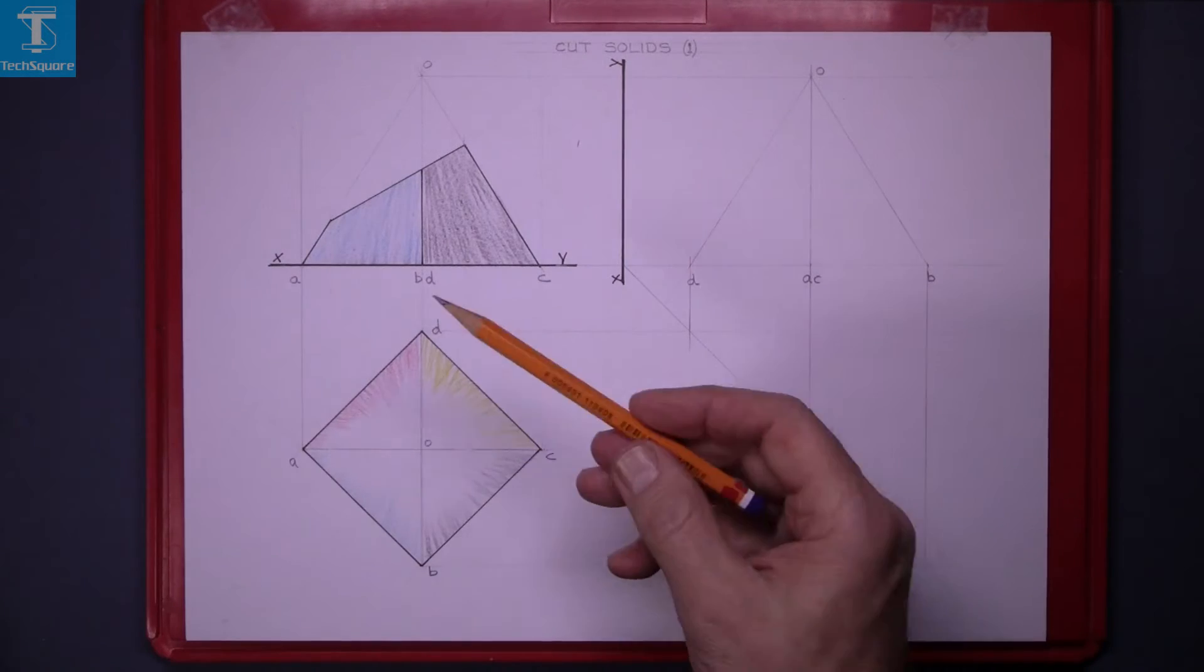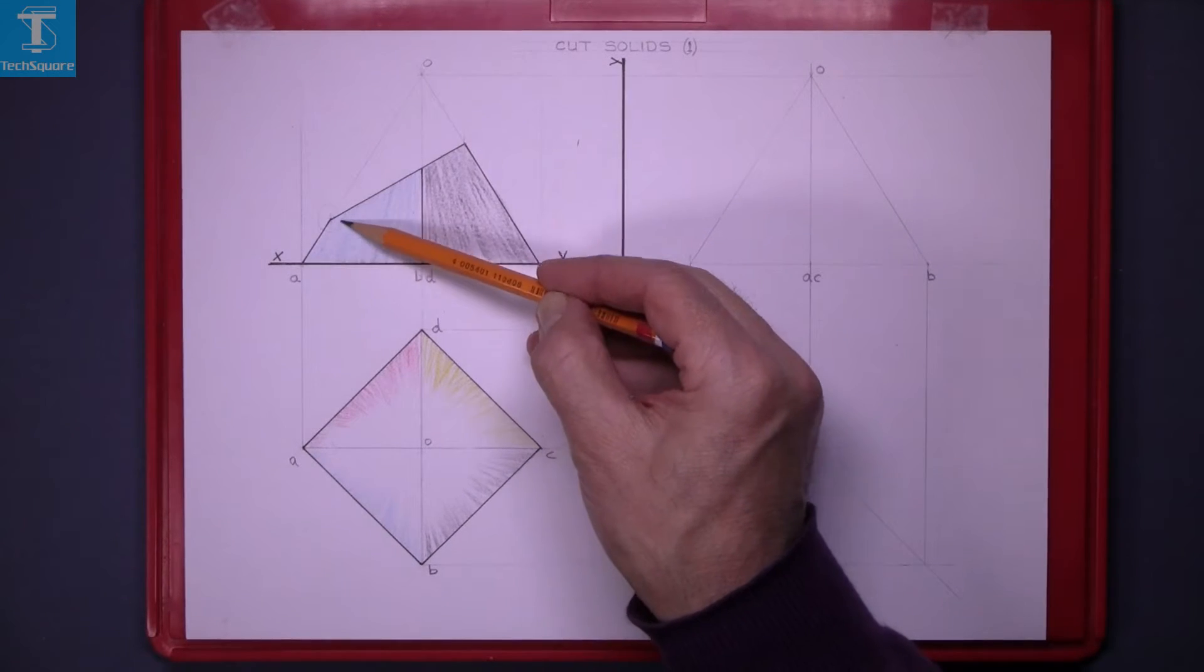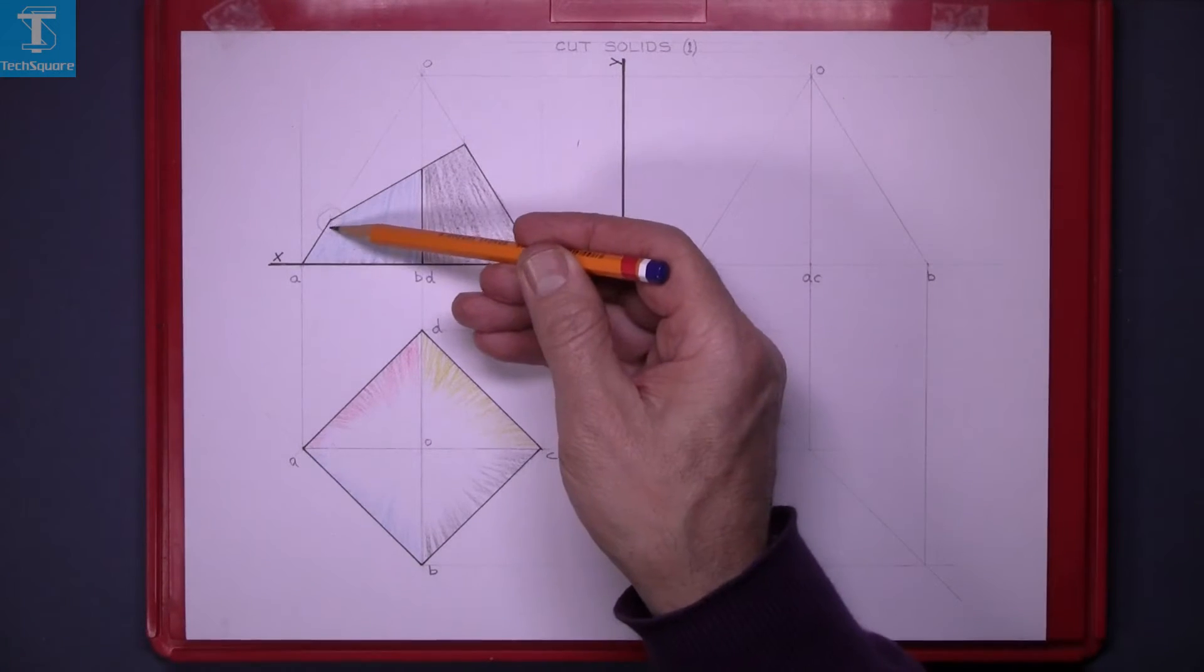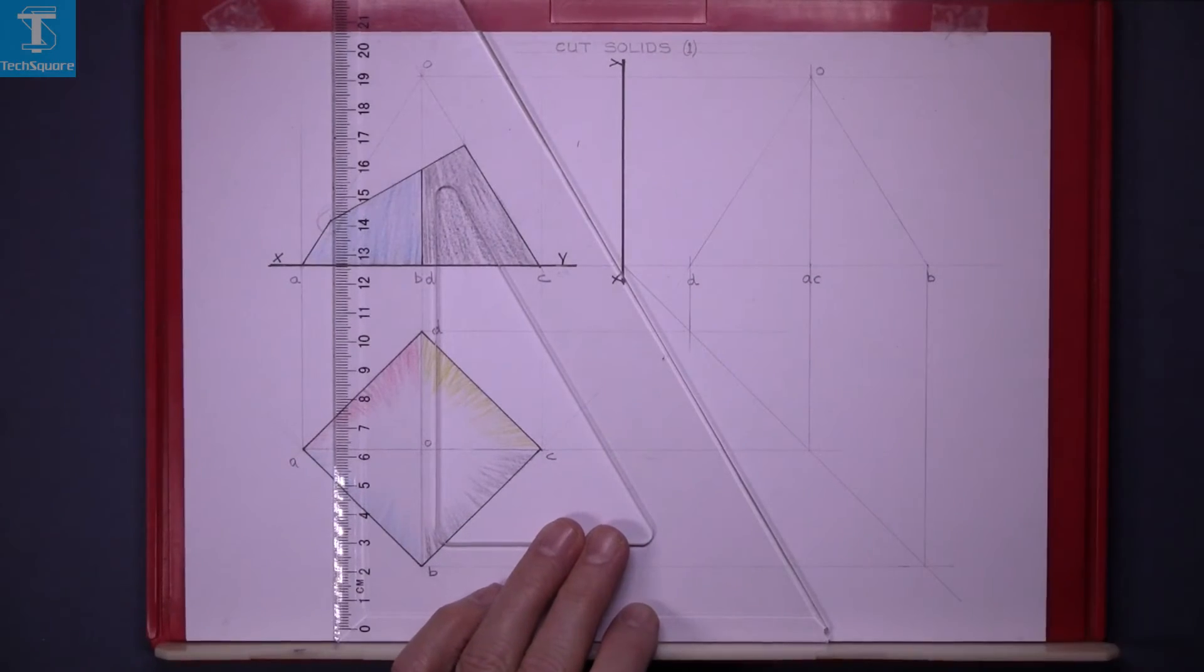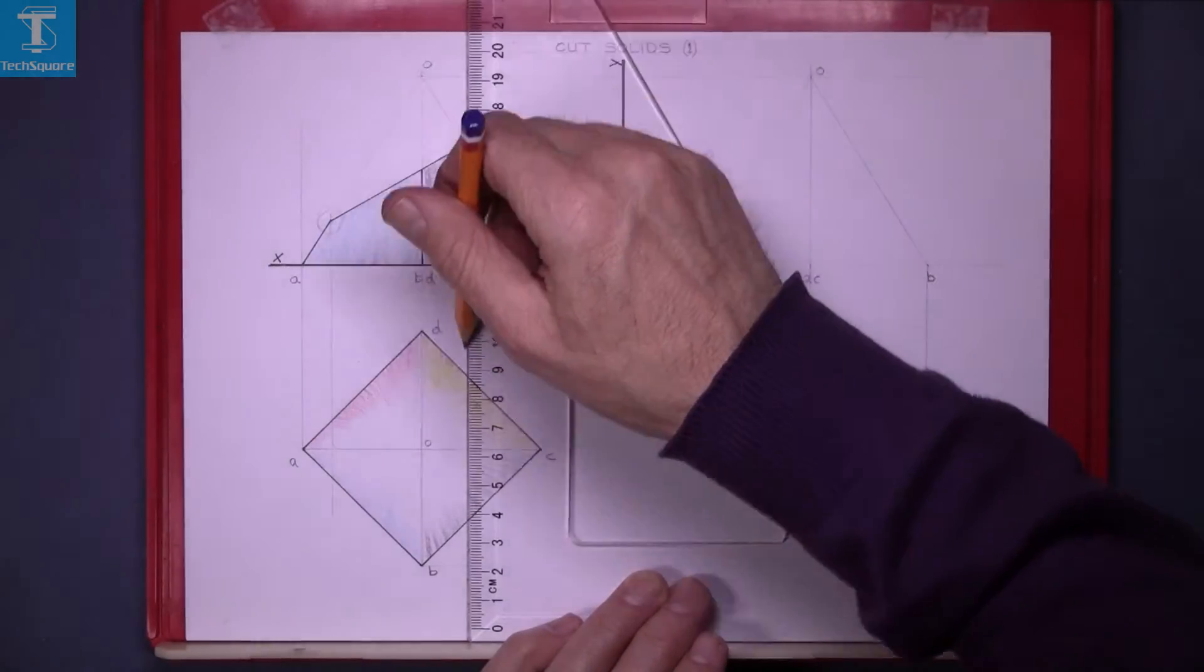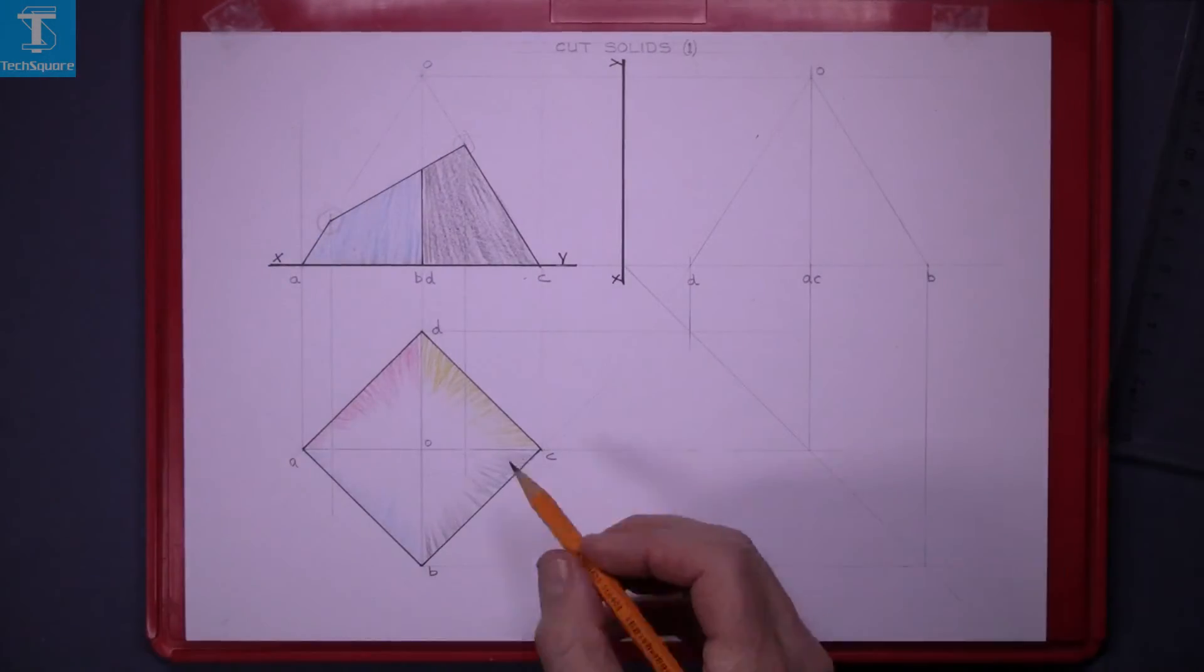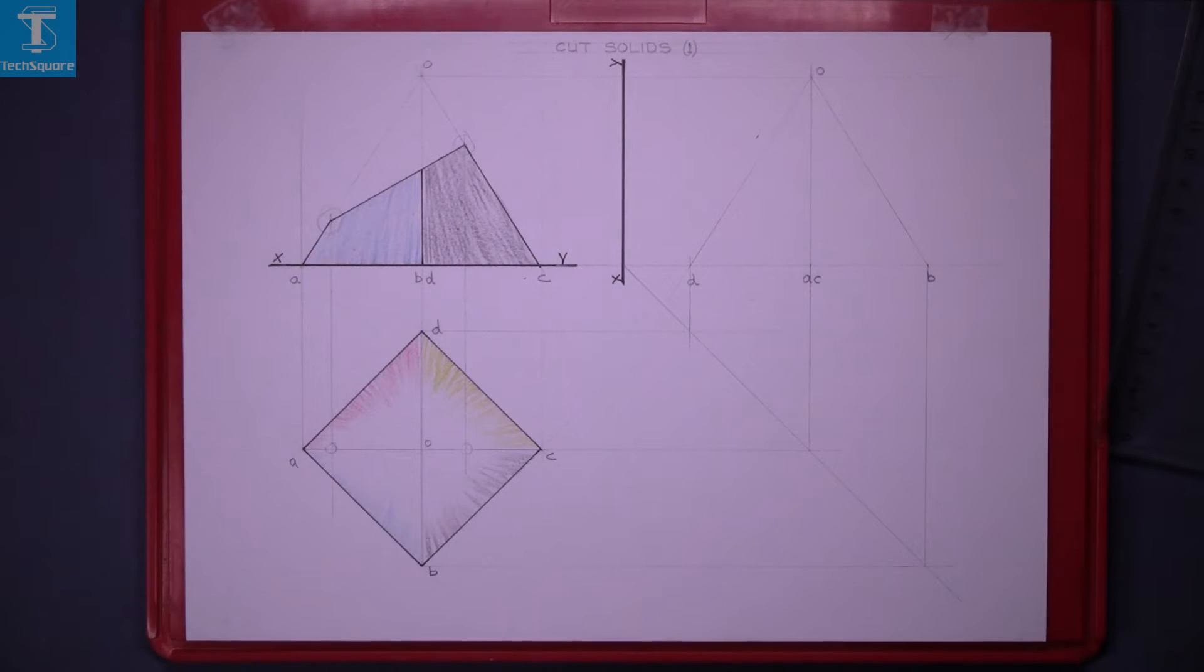To do that we know that this line here is AO and it's cut at that point there. So we can bring that point down to AO and also this point on this side and that's a point on OC and a point on AO there.